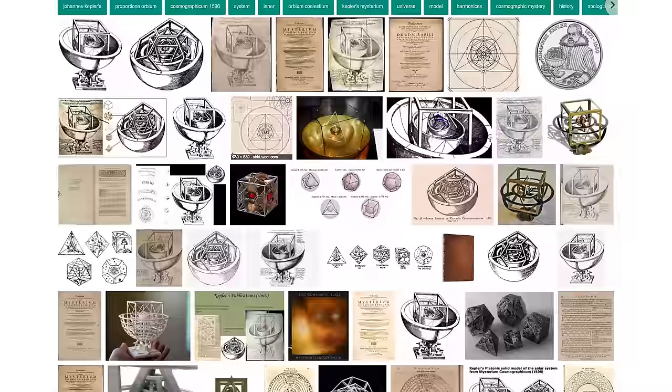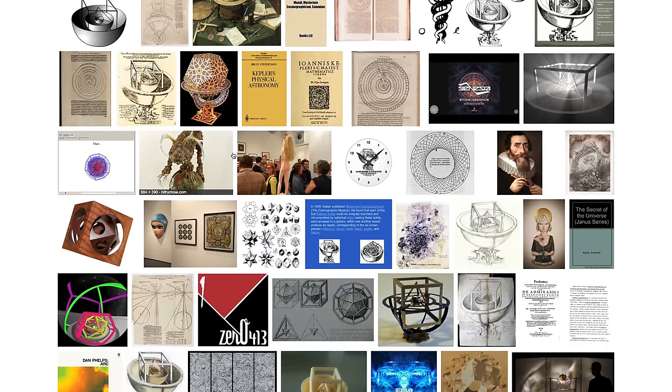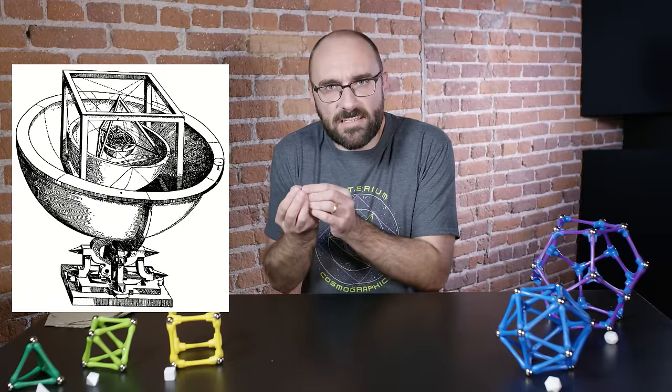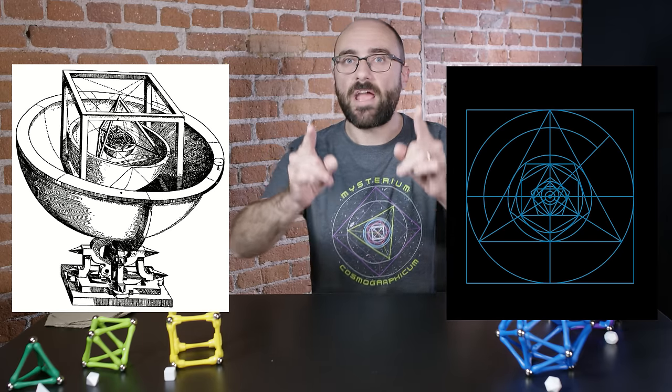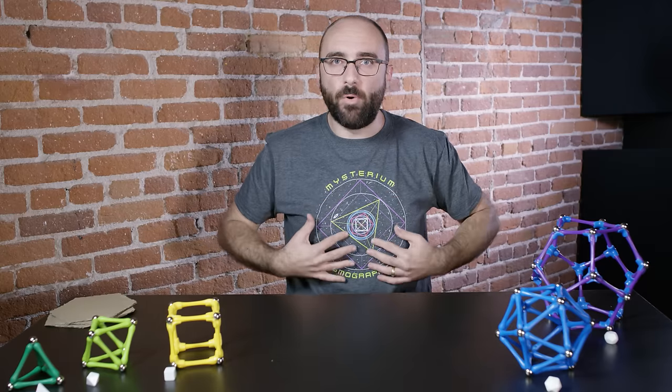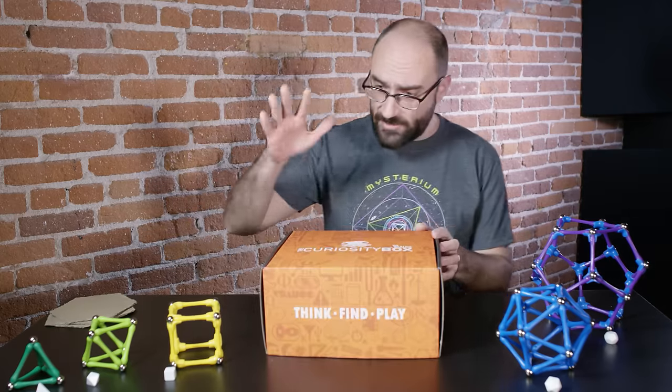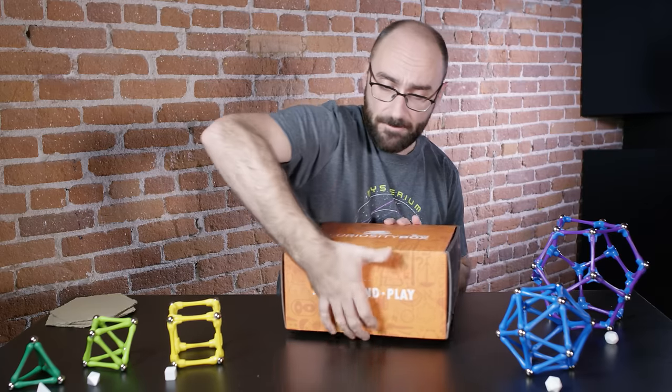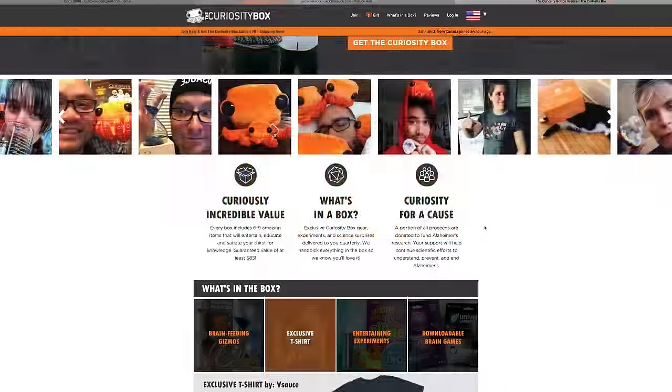If you try to look for a model or diagram of Kepler's Mysterium Cosmographicum, you will mainly just be confused. Most of what's out there have detail that's really hard to decipher, or they're just literally incorrect. That's why I knew that this shirt had to be born. It comes in the latest curiosity box, which is full of awesome science and math toys curated by myself, Jake, and Kevin. This comes to your house four times a year, and a portion of all the proceeds from the curiosity box goes towards Alzheimer's research.